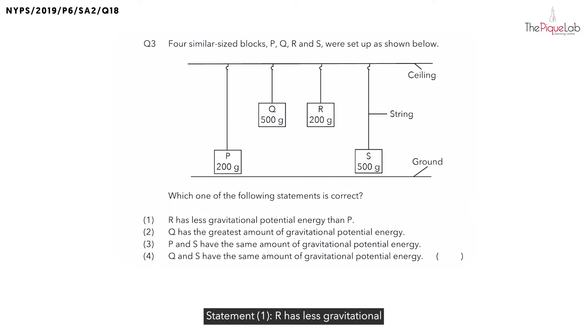Statement number 1: R has less gravitational potential energy than P. Since we are comparing the gravitational potential energy possessed by these objects, let's recall the two factors that affect the GPE possessed by the object.